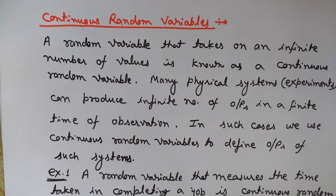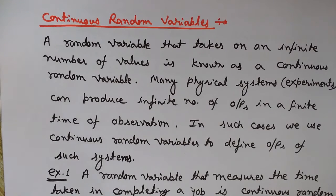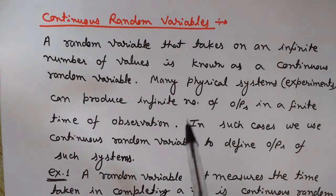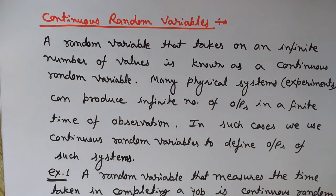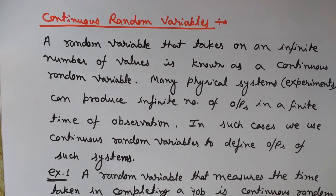Now we will see the continuous random variable. A continuous random variable takes on an infinite number of values — unlike discrete, which had only a certain countable number of outcomes. Many physical systems can produce an infinite number of outcomes in a finite time of observation. In such cases we use continuous random variables to define the outputs of those systems.